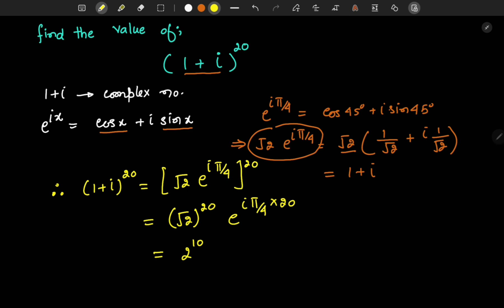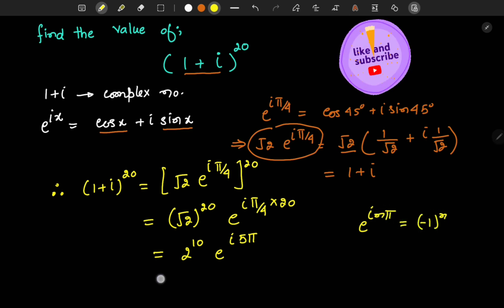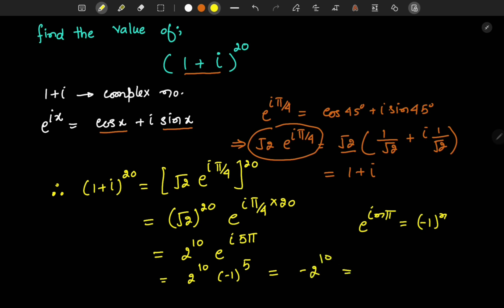We know that e^(inπ) = (-1)^n. This implies 2^10·(-1)^5, which can be written as -2^10, which equals -1024.